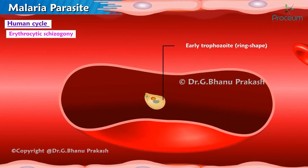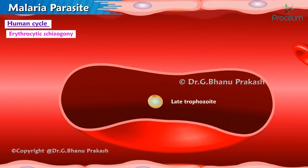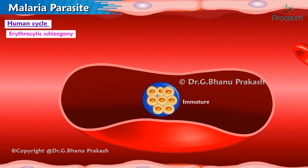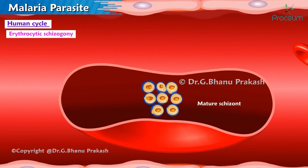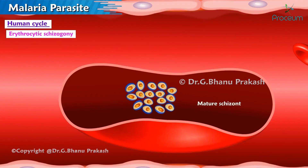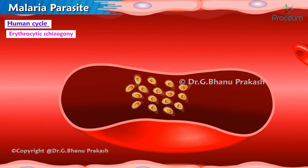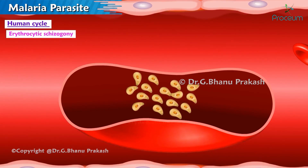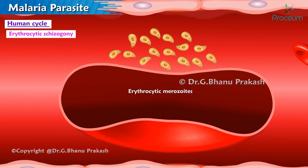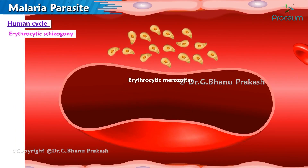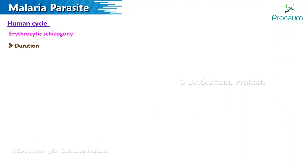The early trophozoite, which is ring-shaped, changes into a late trophozoite, which then transforms into an immature and then mature schizont. After this, the red blood cells rupture, releasing erythrocytic merozoites.